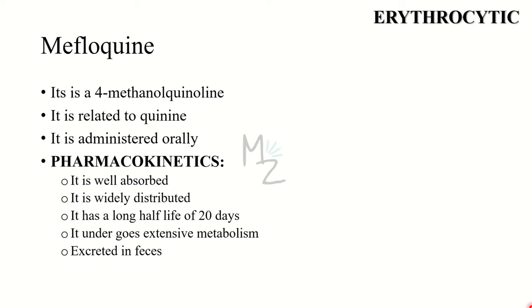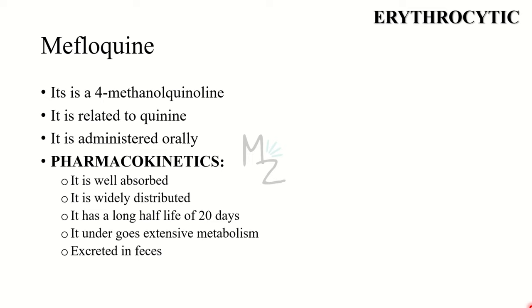The next drug is mefloquine, a 4-methanol quinoline related to quinine, also administered orally. It is effective for prophylaxis against all Plasmodia and for treatment when used in combination with an artemisinin derivative for infections caused by multidrug-resistant forms of Plasmodium falciparum. It is well absorbed and widely distributed, with a long half-life of 20 days, and undergoes extensive metabolism and is excreted in feces. Adverse reactions at high doses range from nausea, vomiting, and dizziness to disorientation, hallucinations, and depression. Because of potential for neuropsychiatric reactions, mefloquine is usually reserved for treatment when other agents cannot be used. ECG abnormalities and cardiac arrest are possible if mefloquine is taken concurrently with quinine.